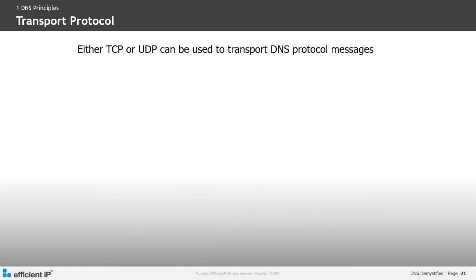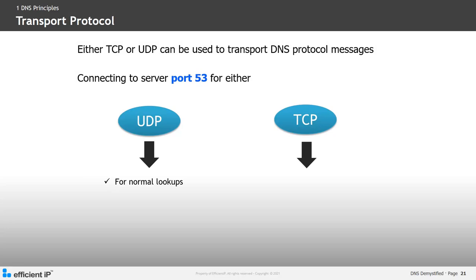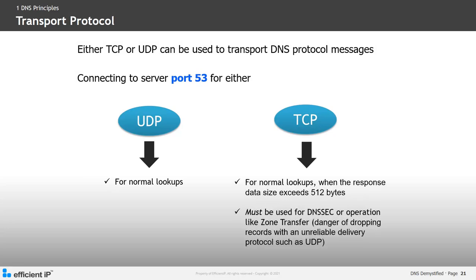How is DNS information transmitted? The transport protocol used to carry DNS protocol messages is either TCP or UDP, both using destination port 53. UDP is typically used for normal lookups, while TCP is used for normal lookups when the response size exceeds 512 bytes. TCP is also used for DNSSEC and other operations like zone transfers, where there may be a danger of dropping packets when using UDP, which is considered an unreliable delivery protocol.